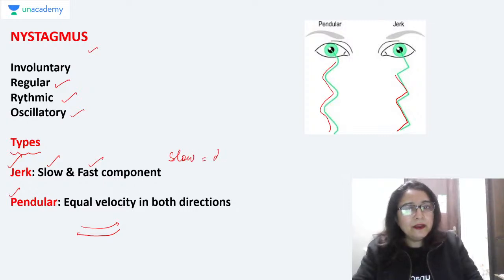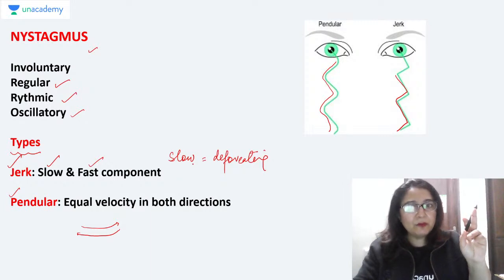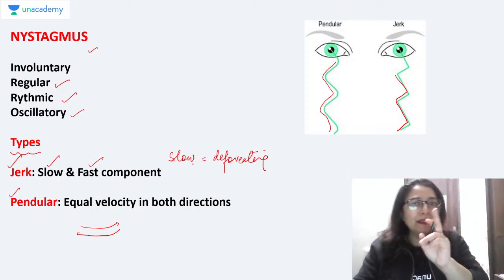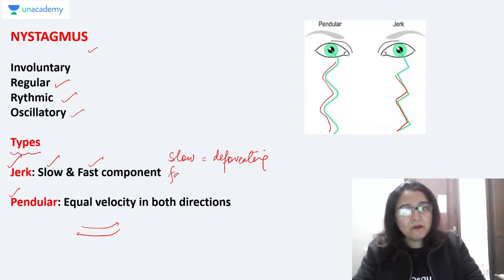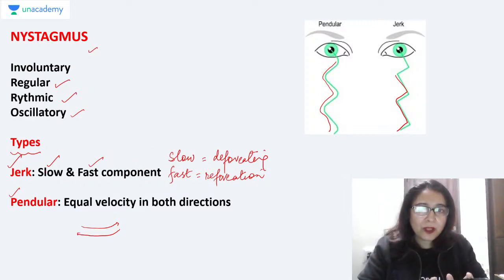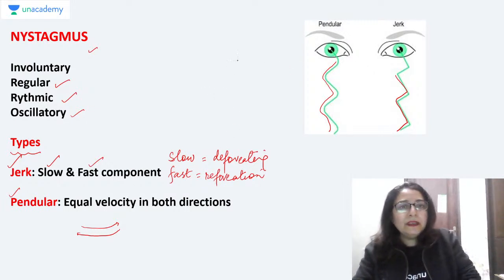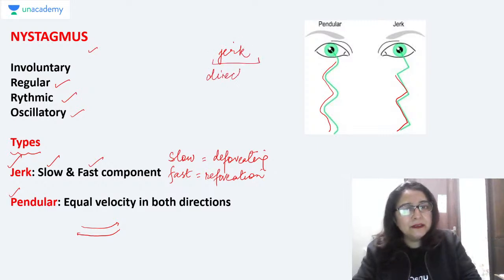In jerk nystagmus, the slow component is usually the defoveating motion — the eye moves away from the fixation point — and then it comes back by the fast component for refoveation. So the fast component is for refoveation. In jerk nystagmus there is a slow component and a fast component; in pendular nystagmus both components have equal velocity.